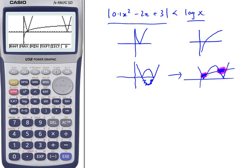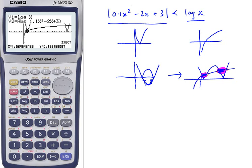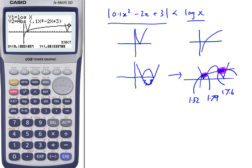Press G-solve, intersect, F5. There's our first solution: 1.52. Our next answer is 1.79. Our third answer is 17.6, and our fourth answer is 19.1.